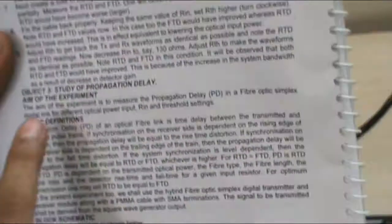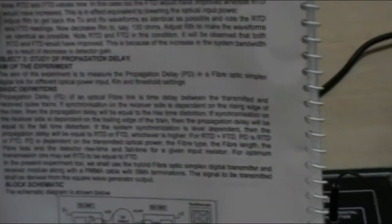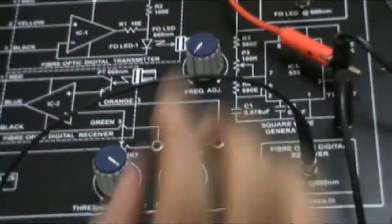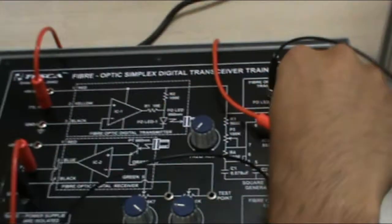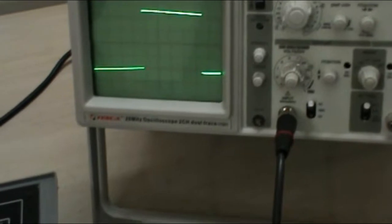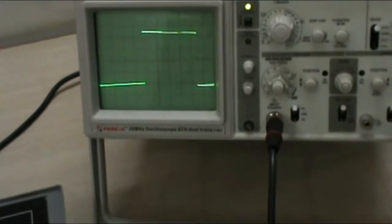The third object is study of propagation delay. The aim of the experiment is to measure the propagation delay in a fiber optic simplex digital link for different optical power input, RN and threshold settings. The connections are same, the starting connections as you can see. The optical fiber is connected, the output TTL out is connected to TTL in, and the TTL out is connected to CH1. The VO TTL out is connected to CH2 as it is done earlier. You can see a square wave at the oscilloscope at CH1. Now adjust RTH and get a same square wave at CH2. We have already got this in the earlier experiment.